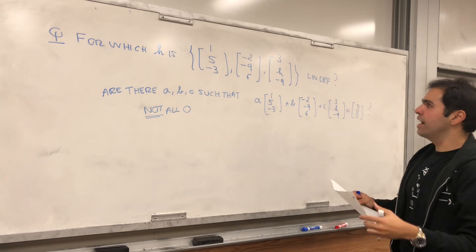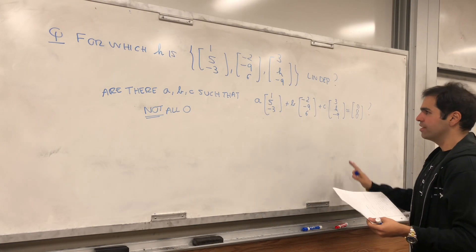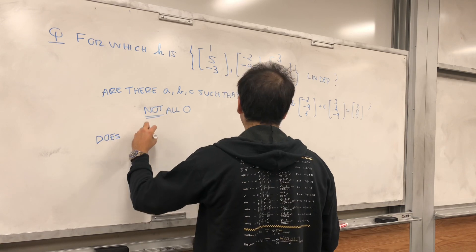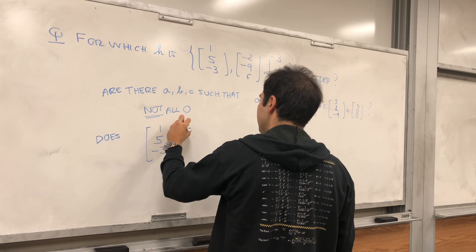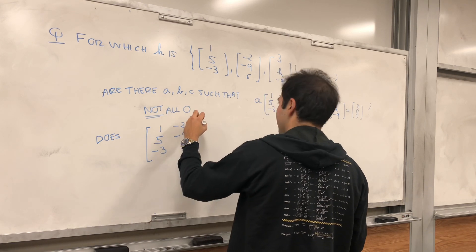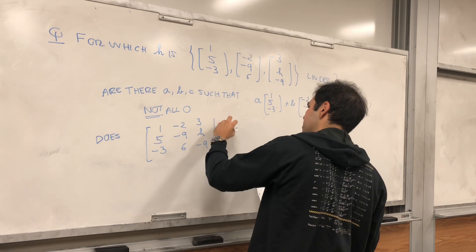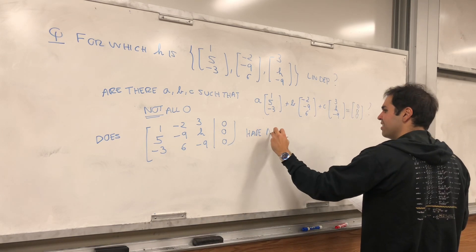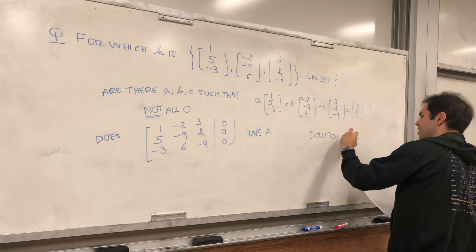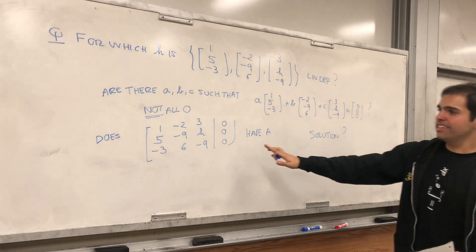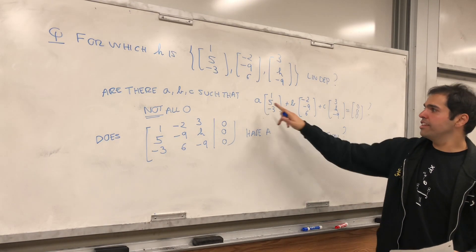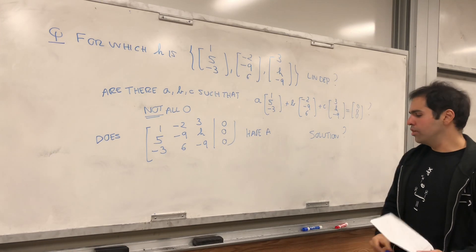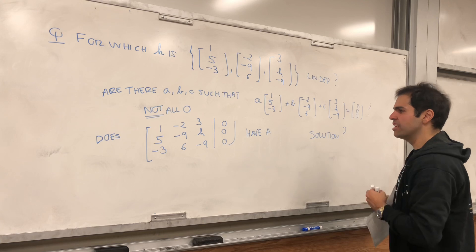To write this more compactly, are there A, B, C, not all zero, such that A times the first vector plus B times the second vector and C times the third vector equals to the zero vector. In terms of systems, all this means is does the system Ax = 0 have a non-zero solution? This system always has one solution because you can always let A, B and C be 0, but the question is really does this have a non-zero solution?